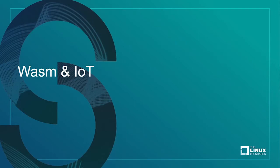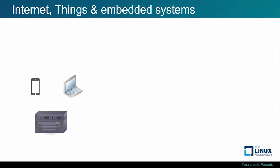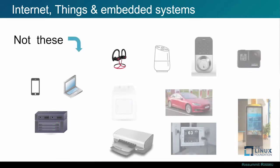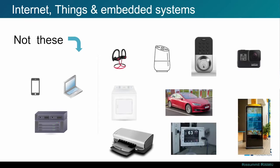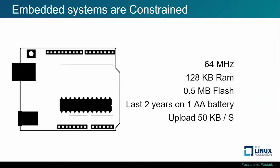Now to the meat of what we're talking about: WebAssembly and IoT. When we talk about machines and computers with connectivity, we think of smartphones, laptops, and servers. But when we say IoT, we don't mean those kinds of things — we mean things like door locks, digital assistants, medical devices, and signage — what I'd categorize as traditional embedded systems. The main difference between an embedded system and a general-purpose computing platform is that embedded systems have constraints; we call these constrained environments or constrained devices.